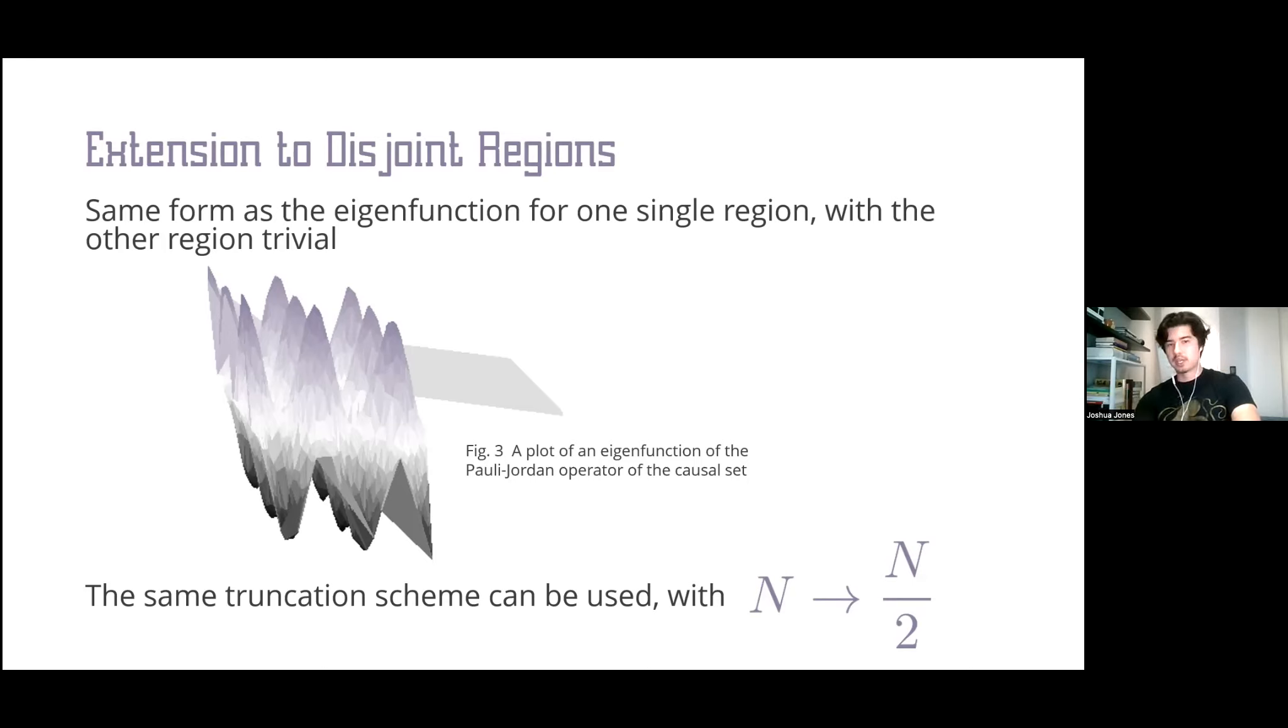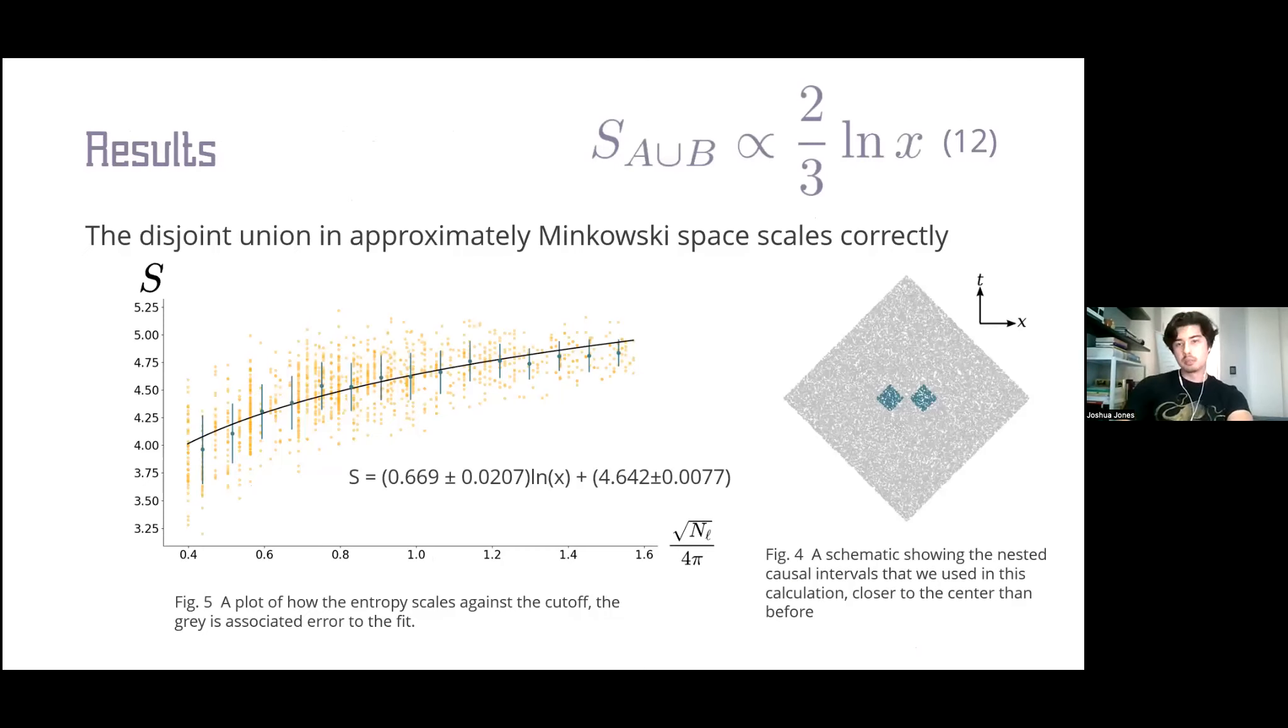Now that we understand how to truncate in the disjoint case, I'll present some results using this disjoint region truncation scheme. We consider the schematic in figure 4, where we have two small sub-regions that are disjoint in a much larger global diamond. They're so small so we could put them in the middle where the Sorkin-Johnston vacuum is very Minkowski-like. We retrieved the expected continuum scaling of two-thirds times the logarithm of the characteristic length.